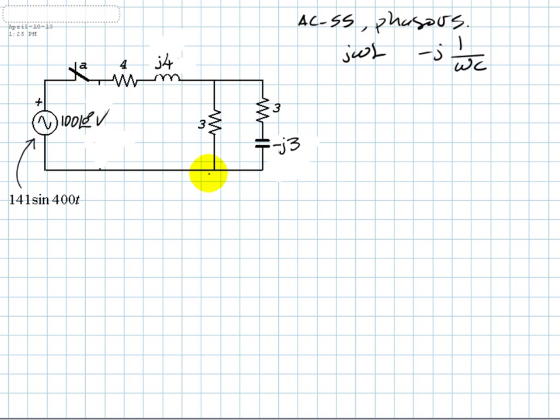Let's find that. This current will be the current in the inductor, right? How do I find that? That current is going to be 100 with 0 degrees divided by the total impedance seen by the source. That is 4 in series with a parallel of 3 and negative j3. That is the current in the inductor.